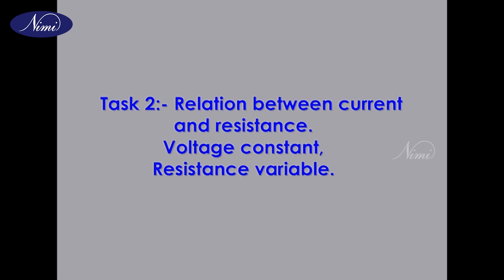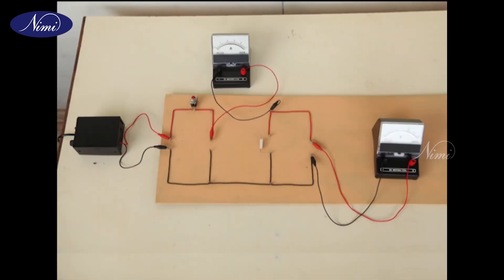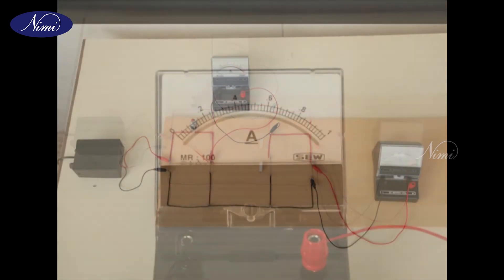Task 2: Relation between current and resistance - voltage constant, resistance variable. Step 1: Connect the circuit elements as shown in figure 11 with the 0 to 1 Ampere Ammeter.